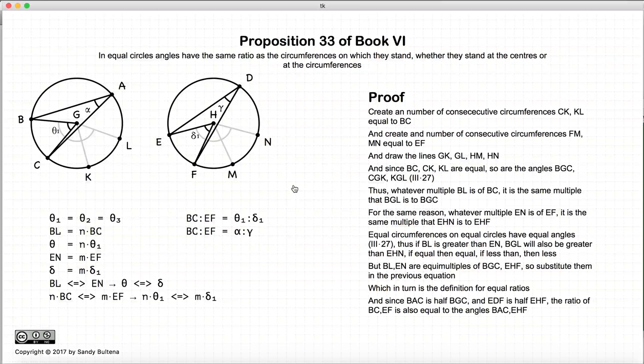And thus, we have demonstrated the proof that in equal circles, the angles have the same ratio to the circumferences. Let me restate it in simpler terms: for two equal circles, the arc BC to EF made by the angles theta and delta will be equal to the ratio of theta to delta. And that concludes this proof. Since this is the last proposition for this book, the next one will be Proposition 1 of Book 7.